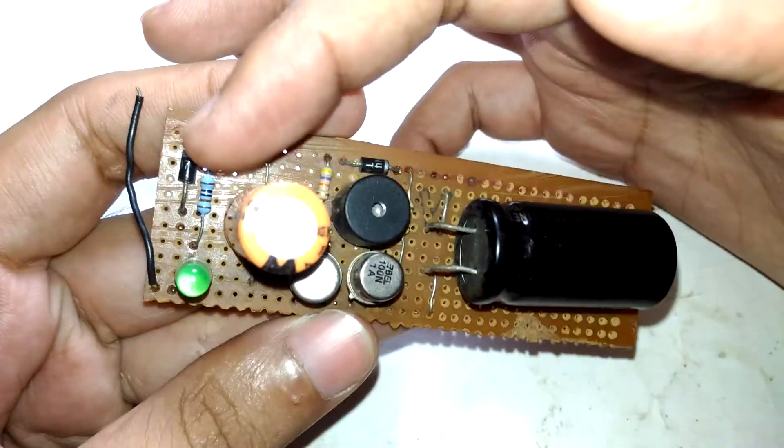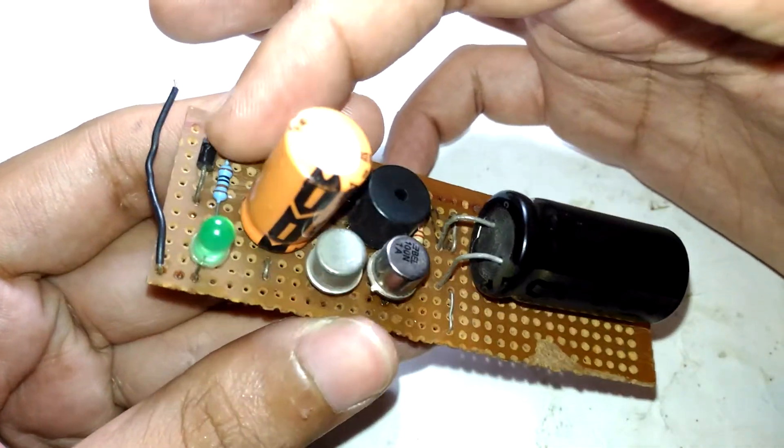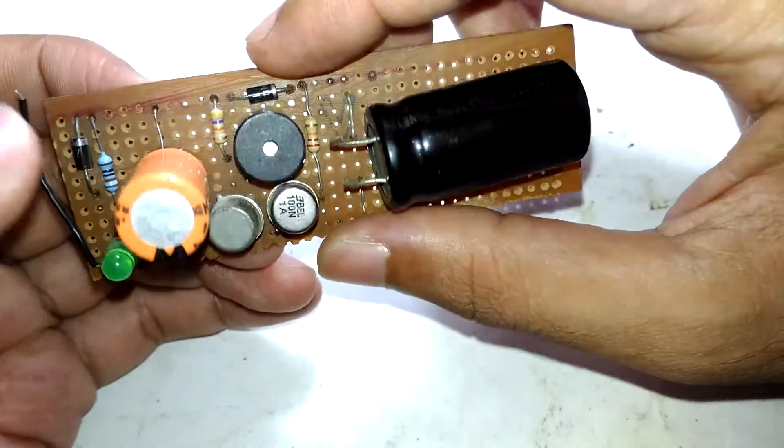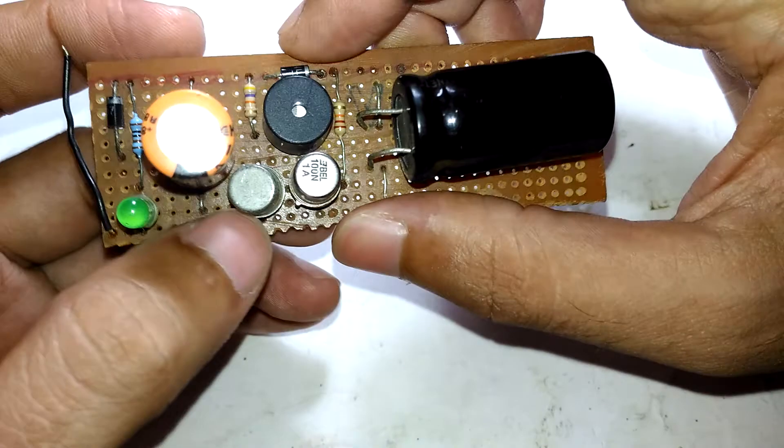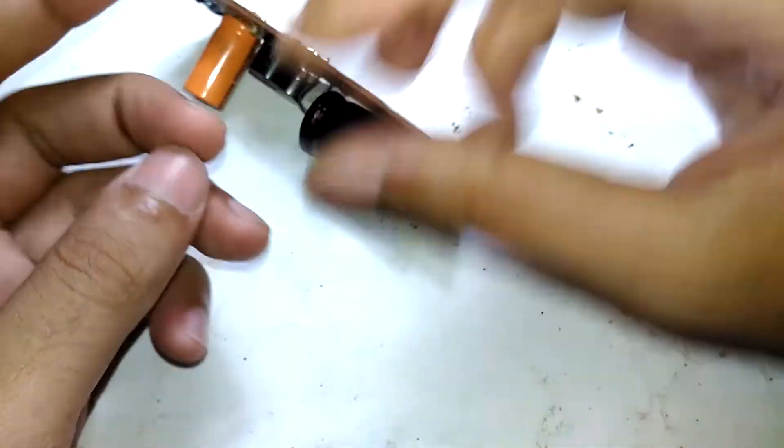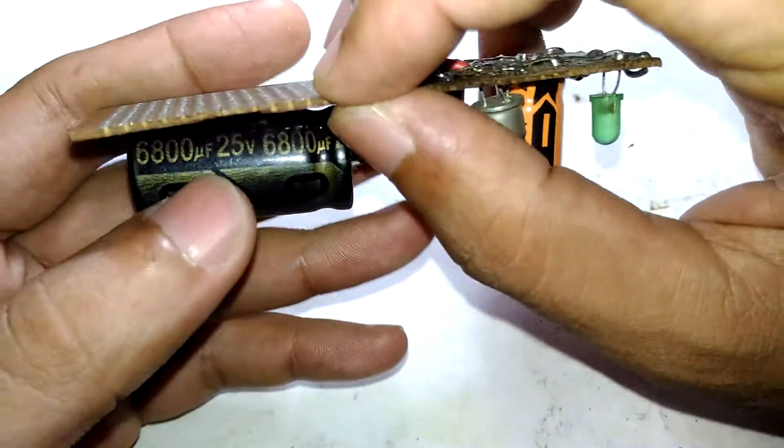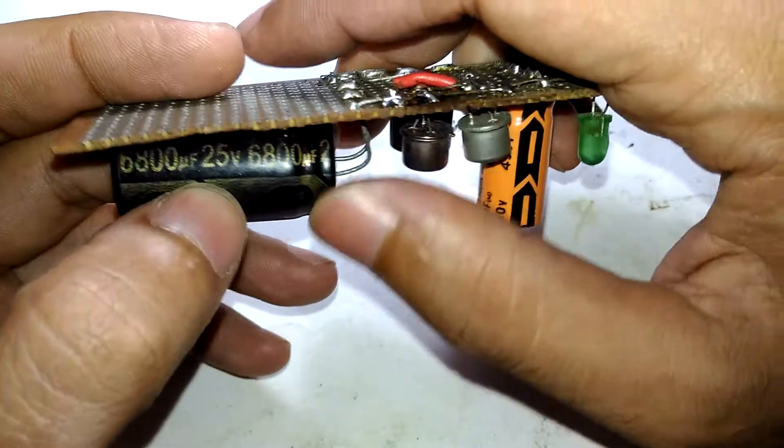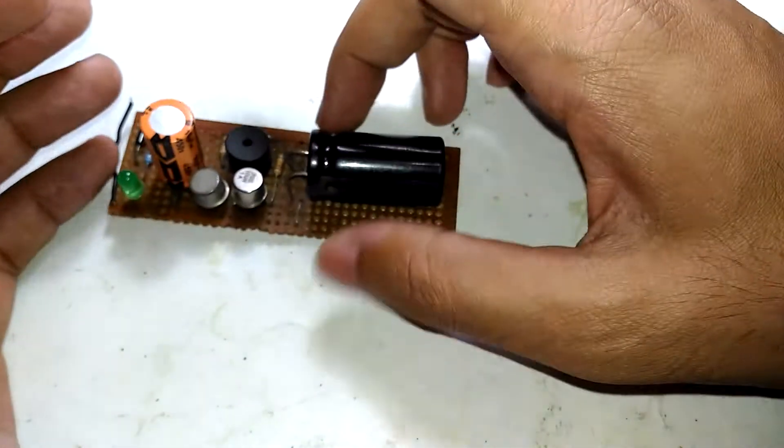All it does is detect the presence of AC mains. You can see it has very limited components: a diode, an LED, two transistors, a buzzer, and a huge capacitor rated for 6800 microfarads at 25 volts.